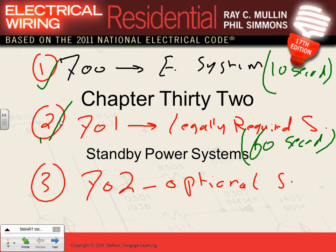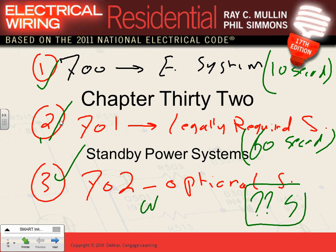The optional standby system is for someone who just wants a generator in their backyard. If you lose power, you go start it whenever you feel like it — there's no time limitation. For example, if Dunwoody wanted a generator to pick up the building if power is lost, that's an optional standby system. We'll go deeper into all three systems when we get to the commercial section.